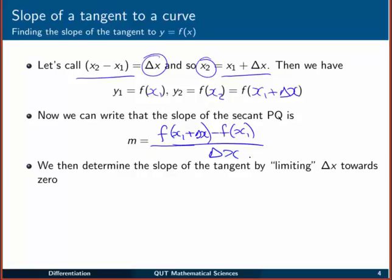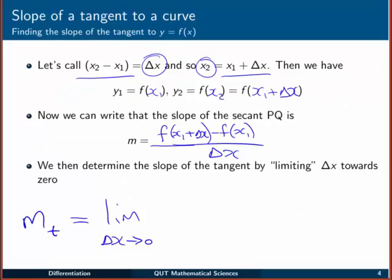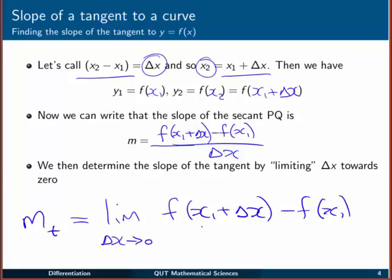In mathematics we can take a limit — a special operation where we make delta x go towards something, but not actually equal to that thing. That's going to allow us to figure out the slope of the tangent. So we can say the slope of the tangent, mₜ, is the limit as delta x goes towards zero of the ratio: f(x₁ + delta x) minus f(x₁), all divided by delta x. As delta x goes toward zero, that's just a mathematical way of saying Q gets closer and closer to P.